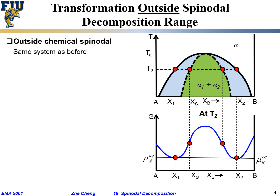What happens if the composition is outside the spinodal decomposition range — specifically outside the so-called inflection point region? This dashed line is what people call the chemical spinodal. The chemical spinodal is obtained by connecting the inflection points at different temperatures. This particular curve is for a particular temperature; at different temperatures you get a different curve, but when you connect all those inflection points you get this dashed curve.